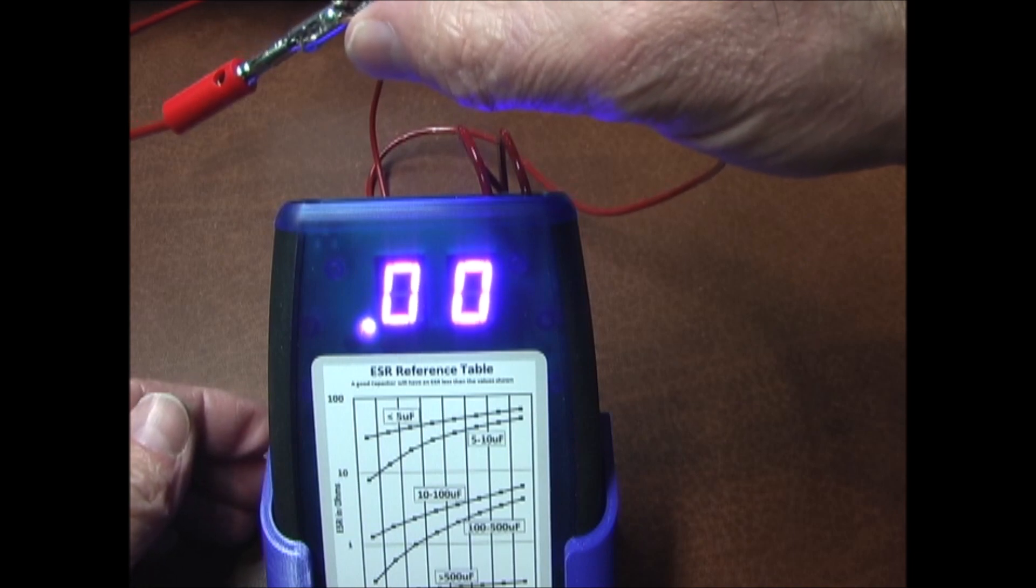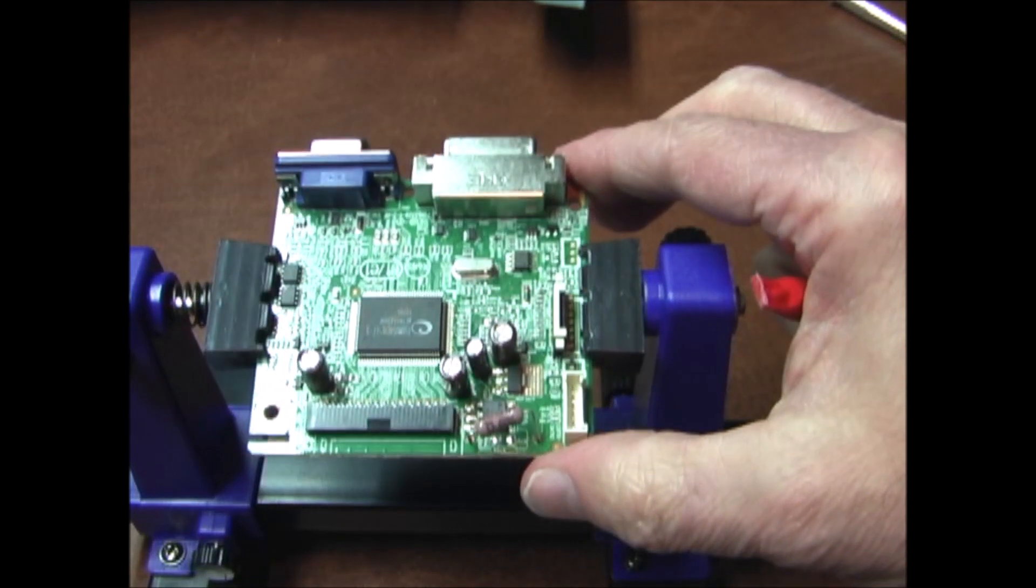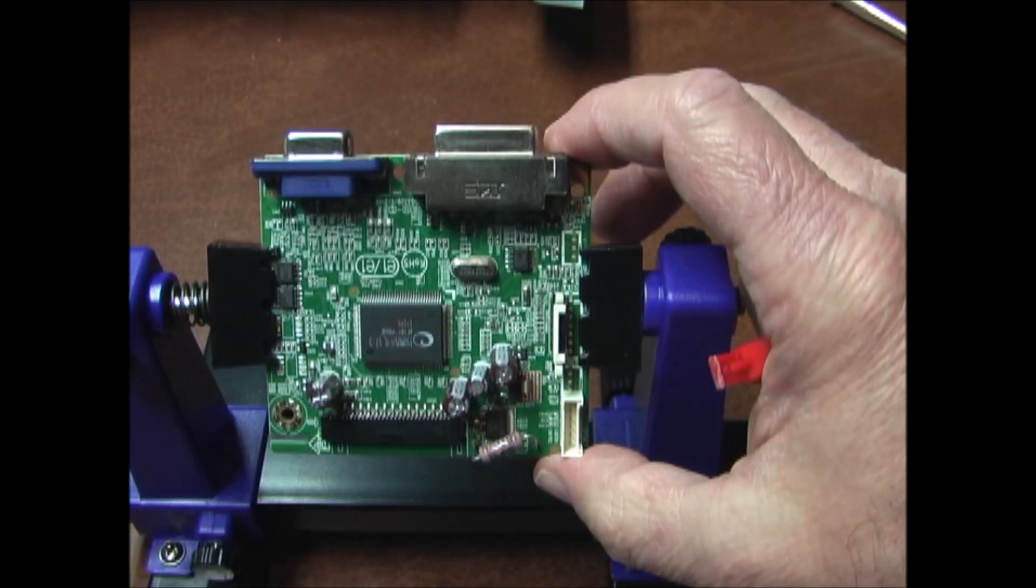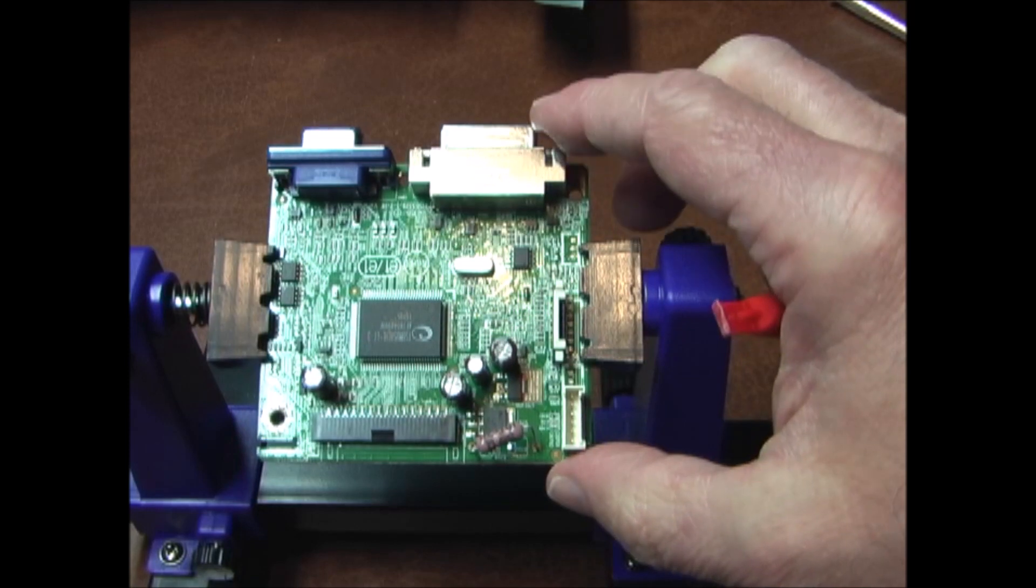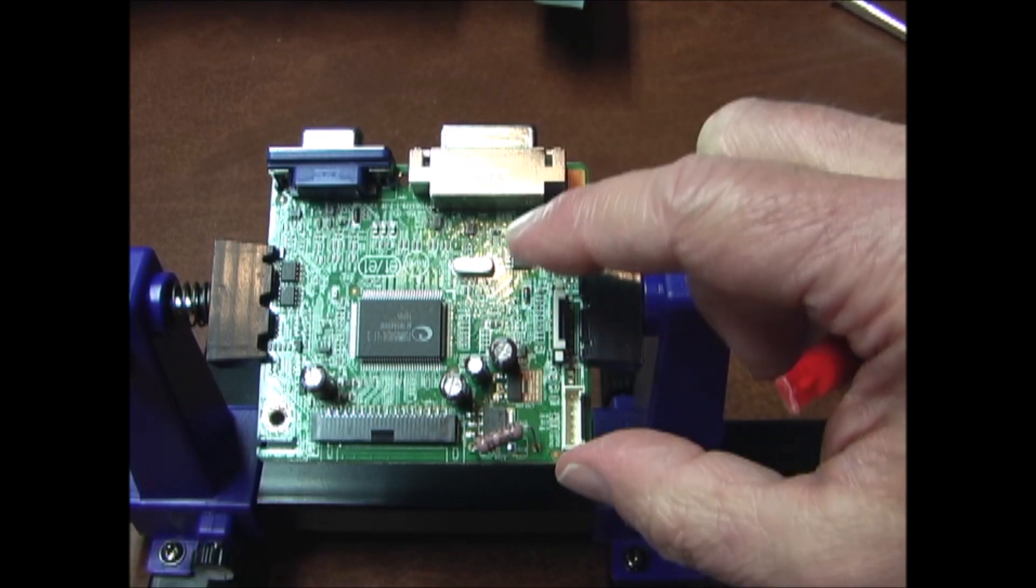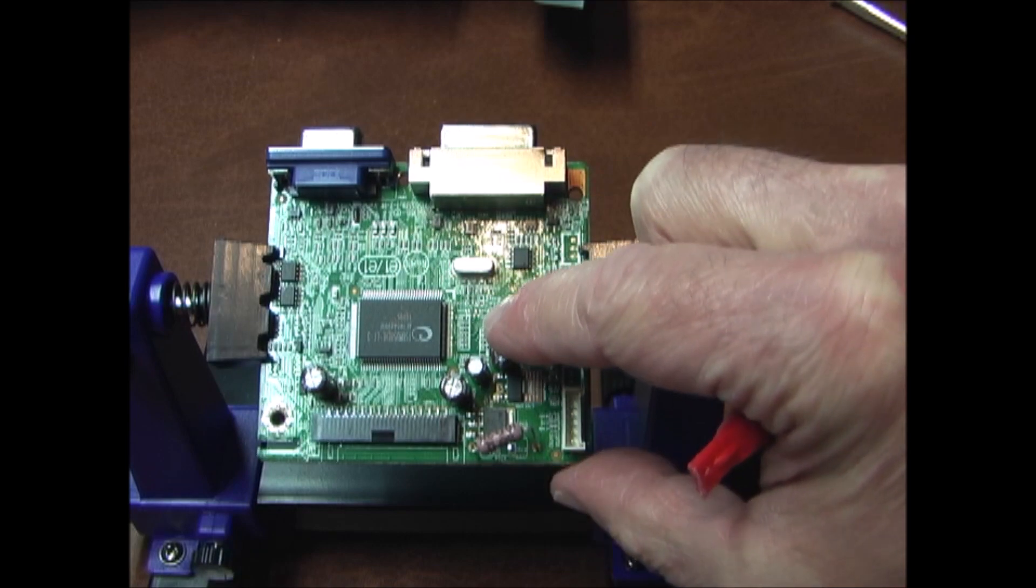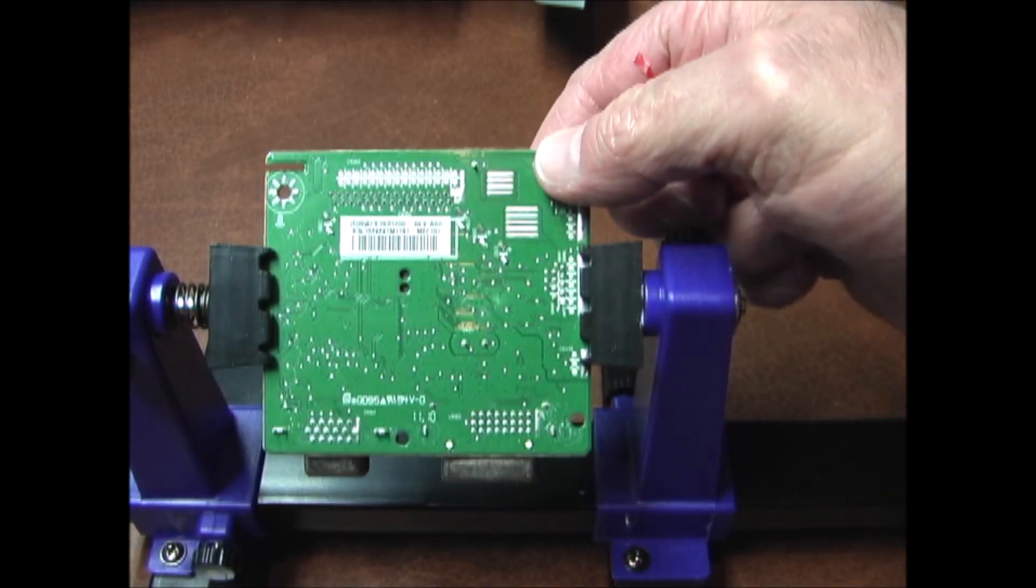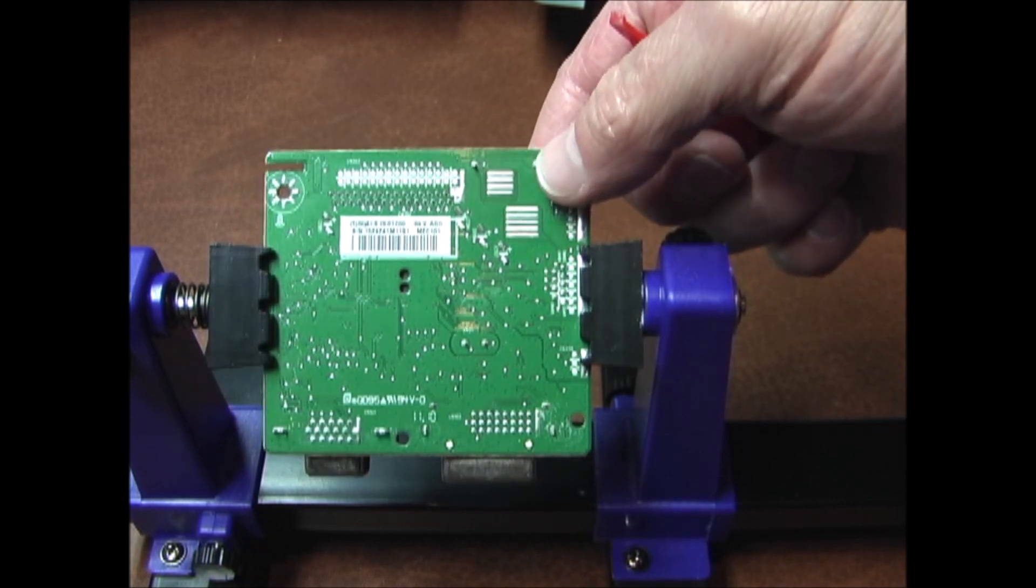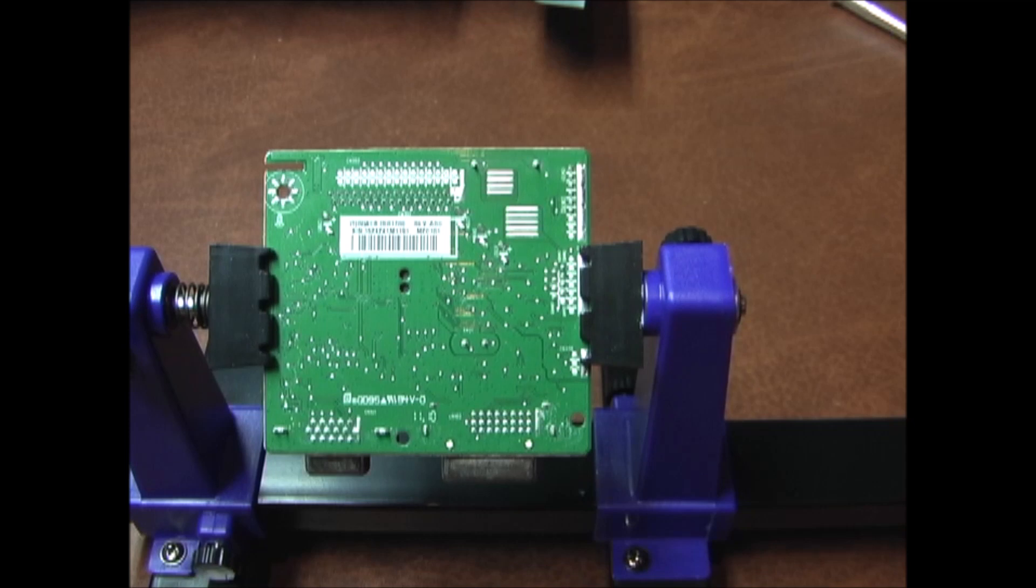I have the logic board out of a computer monitor that isn't working. Usually that's because of bad capacitors, so I'm going to check these. I'll start with this one here. Just flip the board over and use the ESR meter, connecting it to the leads on the capacitor to see what the resistance is.